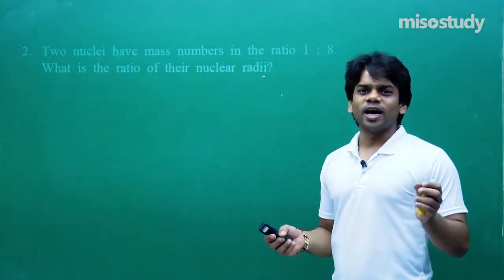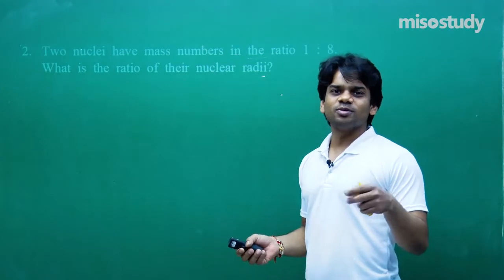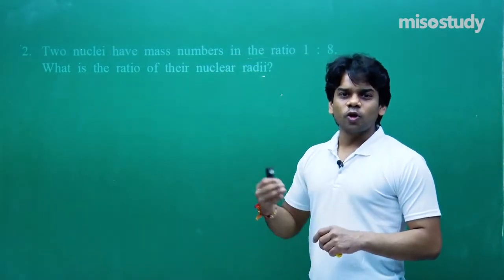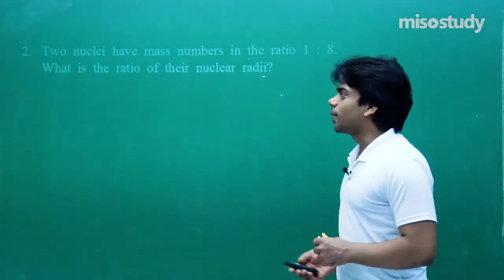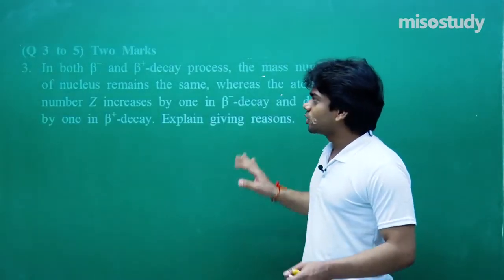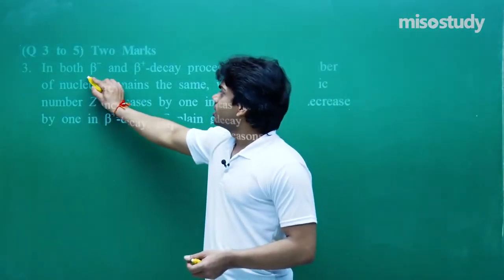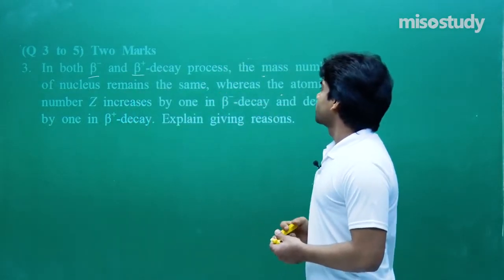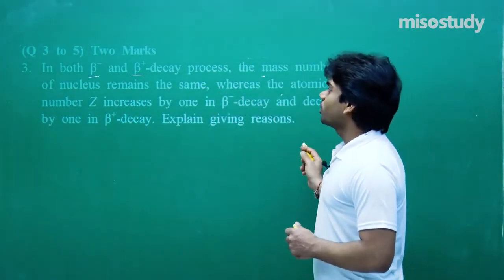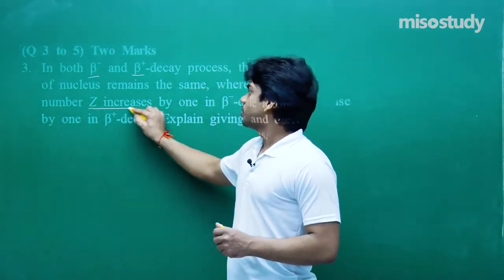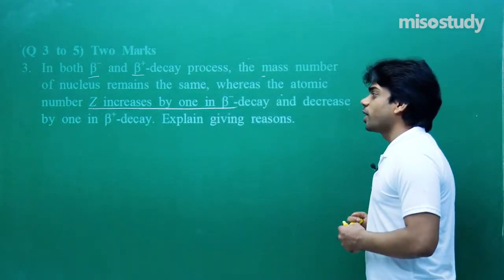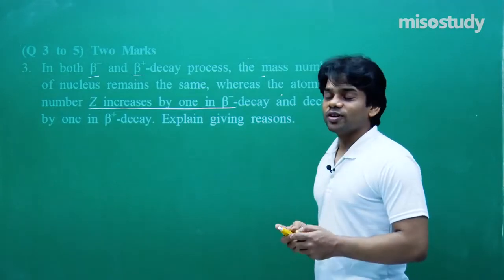CBSE is looking for thorough basic concepts in each chapter. Now moving to 2-mark questions: in both beta-minus and beta-plus decay, the mass number of the nucleus remains the same, whereas the atomic number Z increases by 1 in beta-minus decay and decreases by 1 in beta-plus decay. Explain giving reasons.